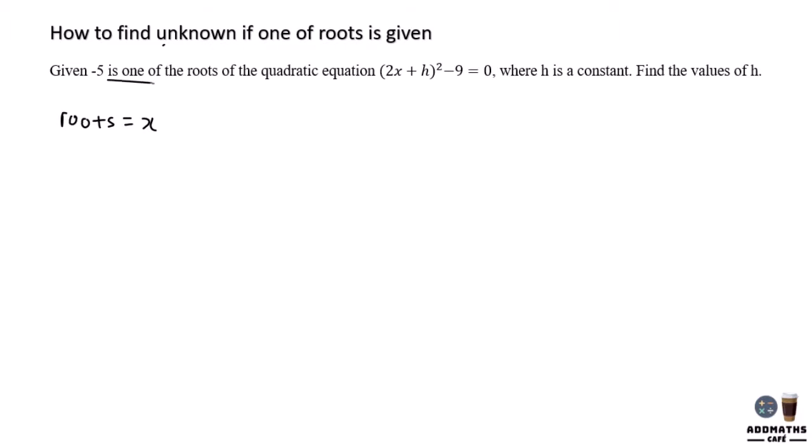Given negative 5 is one of the roots, means that your x will be equal to negative 5 of the quadratic equation (2x + h)² - 9 = 0. Find value of h.